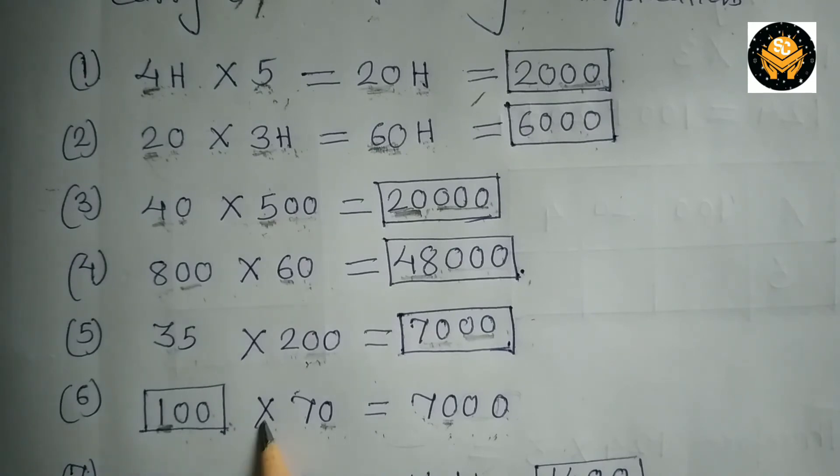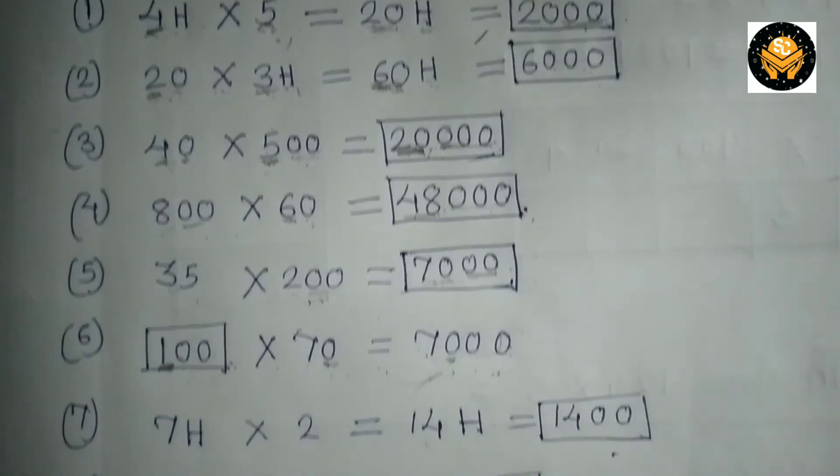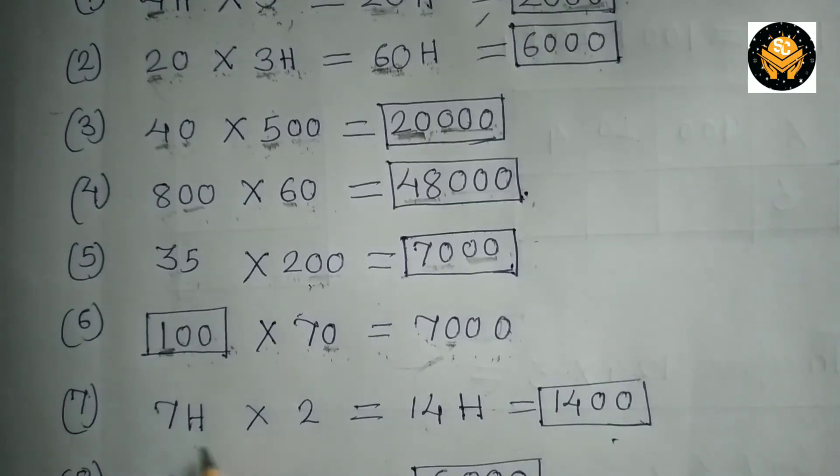Now let's take one more example. 7H multiplied by 2. 7 into 2 is 14. Then you write this H here. So 14H means it is 1400. So in this way you can solve the remaining 2 sums.